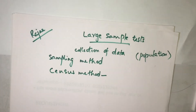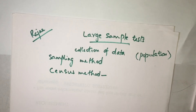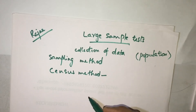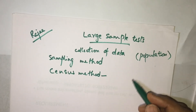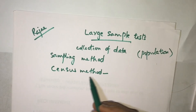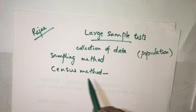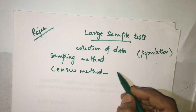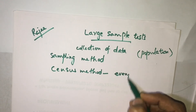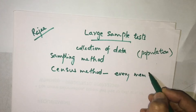Census method means — as you know, every year in India we have a census where people come to our home and take data such as how many people are living, how many males and females there are. So in census method, data is collected from every member of the population.